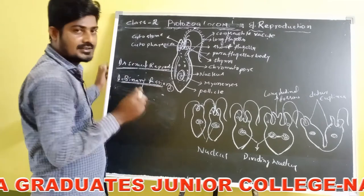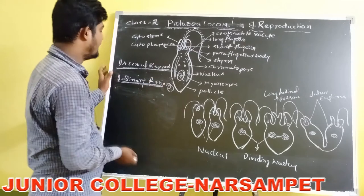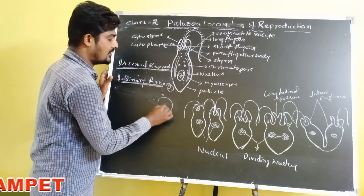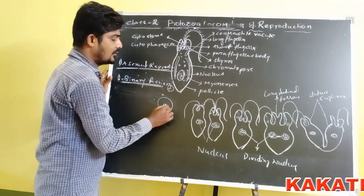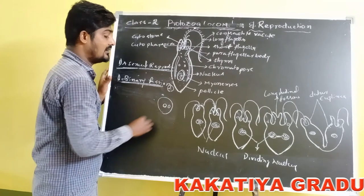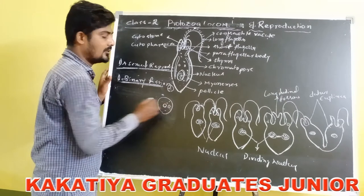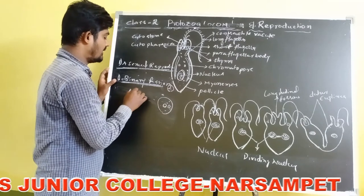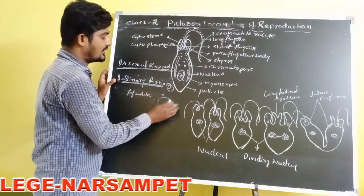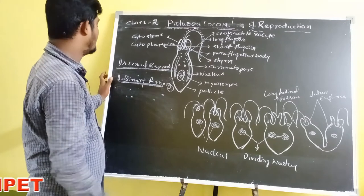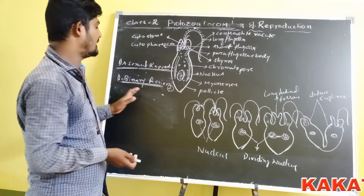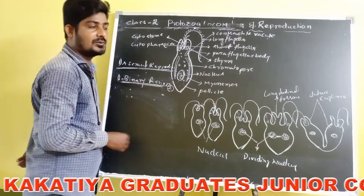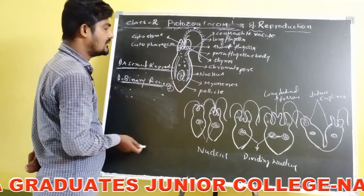Binary fission means a single parent divides into two daughter individuals — that is called binary fission. In this process, first the nucleus divides to produce two daughter nuclei, and karyokinesis is followed by cytokinesis. Binary fission occurs under favorable conditions, such as sufficient light, water, and food. Binary fission is also classified into two types depending on the plane of division axis.